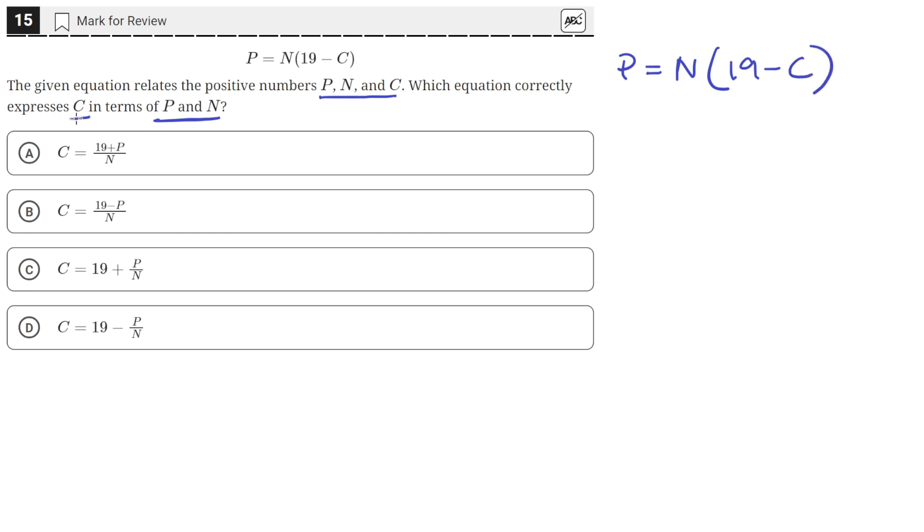And we need to solve for C in terms of P and N, which means we have to isolate C to one side alone, and P and N should be on the other side.